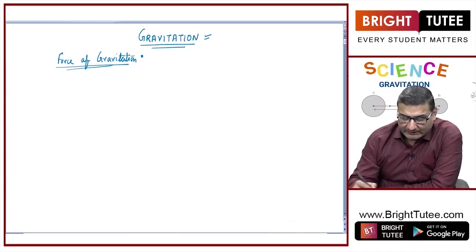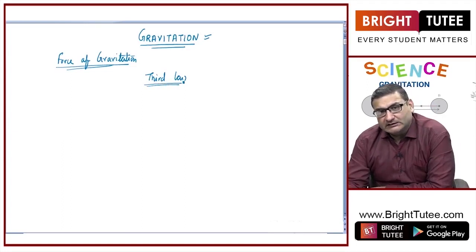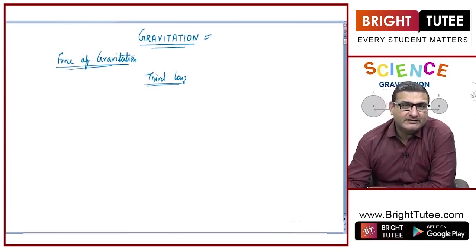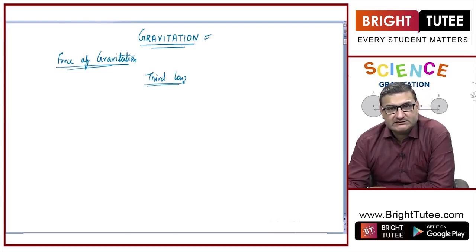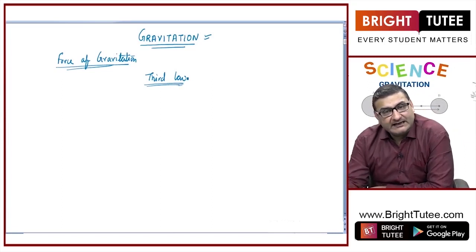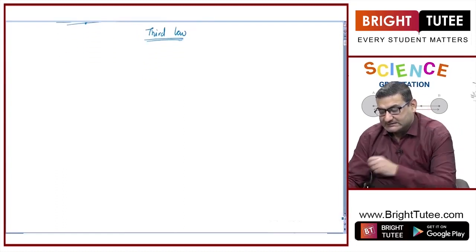Now, importantly, we know that according to Newton's third law of motion, action and reaction are equal and opposite. So he pondered as to whether that apple or the ball also attracted the earth towards it. What about the moon? Is it the same force that is making the moon revolve around the earth? He gave the concept that the moon is actually moving in a linear straight line, but it is because of the earth's gravitational pull that it is forced to revolve in a circular orbit.